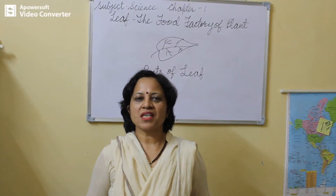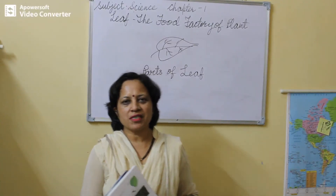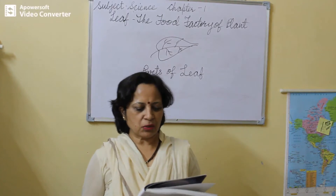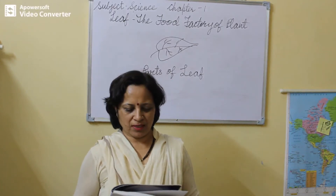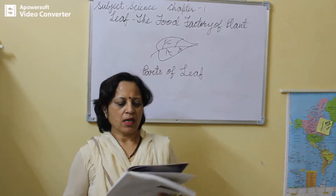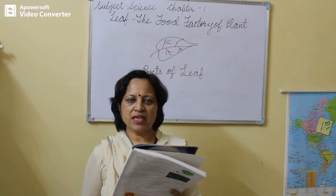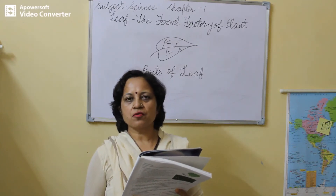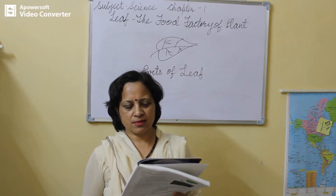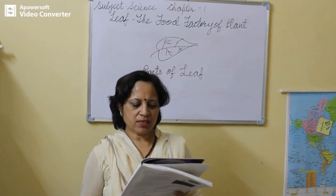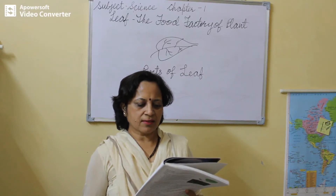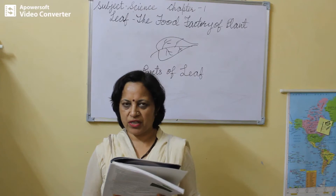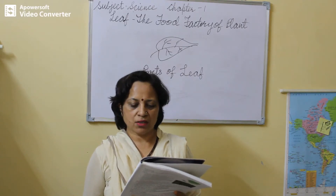Good morning children. In previous class we discussed about photosynthesis. Now let us continue with Activity 1, to show that carbohydrate or starch are formed as a result of photosynthesis. This test will tell us that a leaf makes food in the form of carbohydrates, sugar or starch.